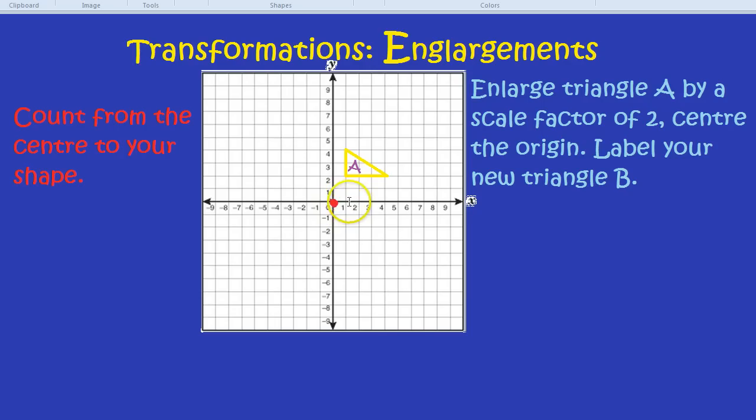So instead of going 1 right, we go 2 right. Instead of going 2 up, we go 4 up. So always starting at the centre, 2 right, 4 up, here's our first point. That's where this bottom left hand corner is now going to be on our new shape. Before it was 1 right and 2 up, now it's going to be 2 right and 4 up.